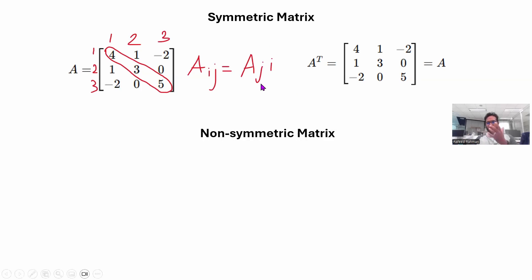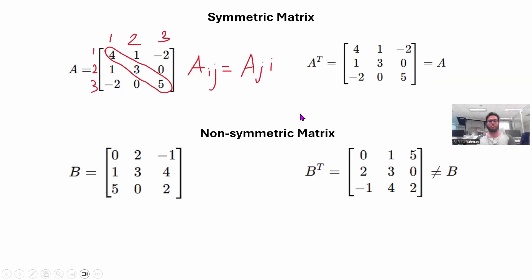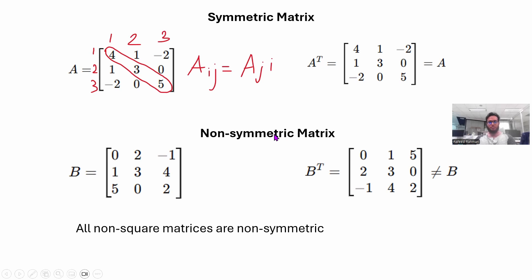Most matrices are not symmetric. For example, if you take matrix B and transpose it — making the first row into the first column, and so on — the result is not going to be equal to the original B. A matrix must also be a square matrix (equal number of rows and columns) in order to be symmetric.